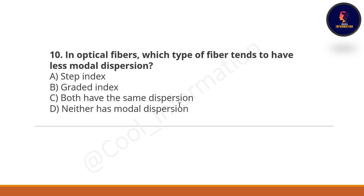Next question: In optical fibers, which type of fiber tends to have less modal dispersion? Option A: step index. Option B: graded index. Option C: both have the same dispersion. Option D: neither has modal dispersion. The correct option is A — step index.